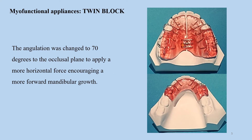Here you can see the upper and lower blocks. The lower mandibular molars are usually kept free, whereas the upper appliance has a screw and various retentive components. Usually the angulation between these two blocks is kept at 70 degrees to the occlusal plane so as to apply a more horizontal force to encourage forward mandibular growth.